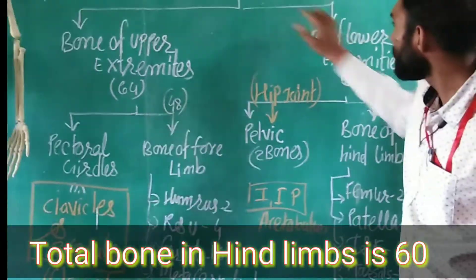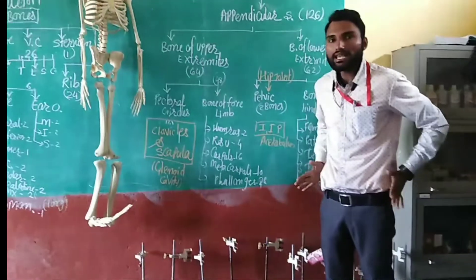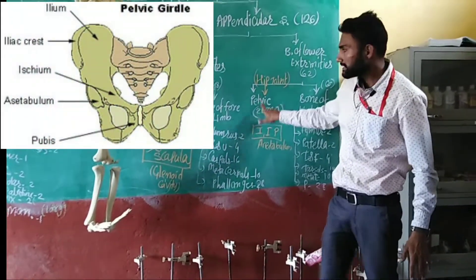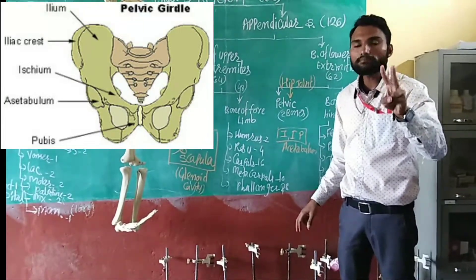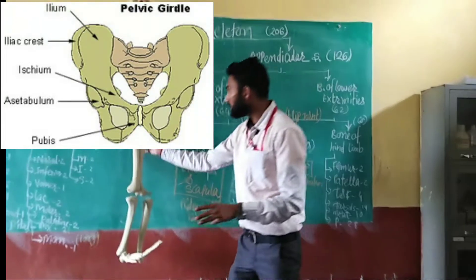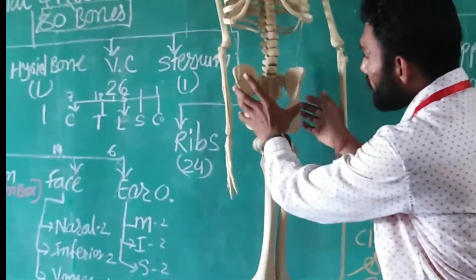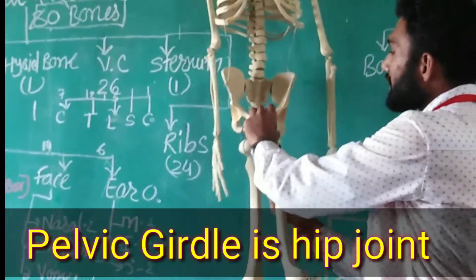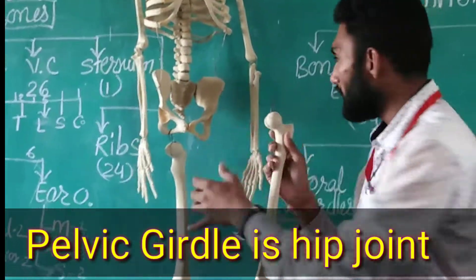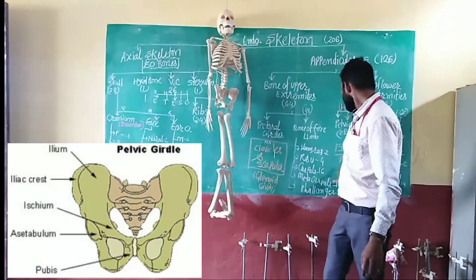The lower portion — lower extremities — has 62 bones. These 62 bones are divided into two categories. First are the hip bones: the pelvic girdle consists of three bones — ilium, ischium, and pubis. This forms the hip joint. The acetabulum cavity is present here, where the femur fits into the hip joint.